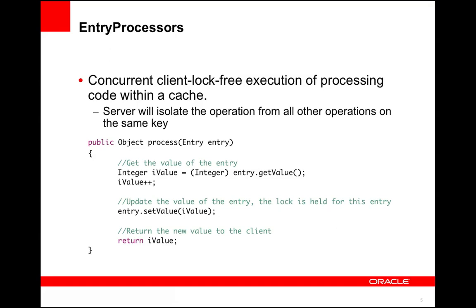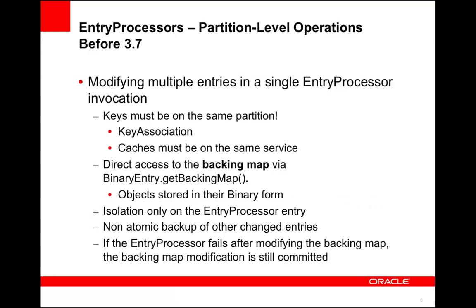When you need to modify multiple values, however, the story becomes far more complex. Because entry processors are executed on storage-enabled members for a given key or set of keys, if you want to modify multiple keys, you must first ensure that they are both stored on the same member. As discussed in the introduction slide, keys are bound to partitions which are bound to members. You can control the way keys are assigned to partitions by taking advantage of a key association interface. You will want the two keys that you wish to modify at the same time to both return the same value from the getAssociatedKey method. In order for key association to work across caches, the caches must be running on the same service.